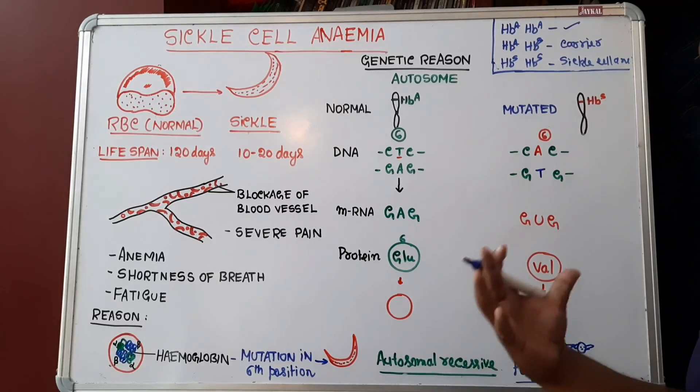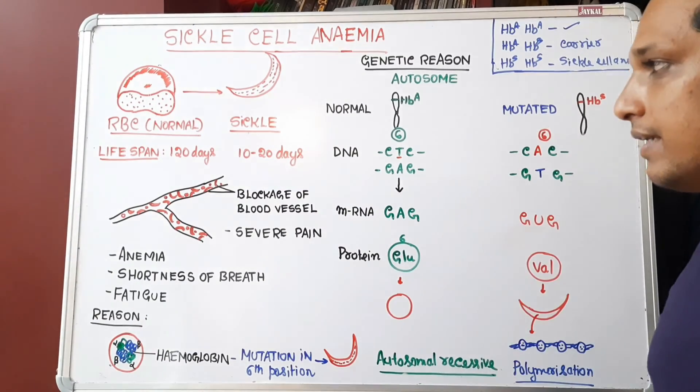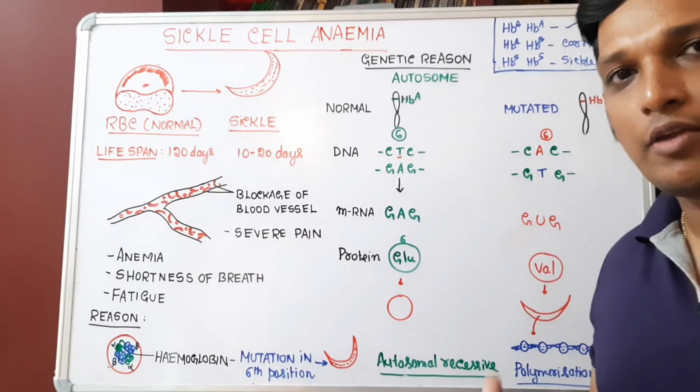Only when both alleles are mutated (HBS/HBS) will a person have sickle cell anemia. This is an example of an autosomal recessive trait. I hope you have understood. Thank you for watching.